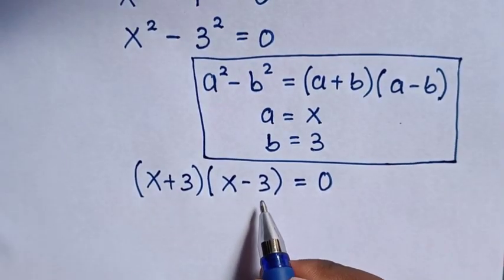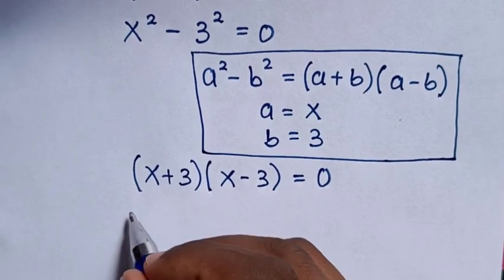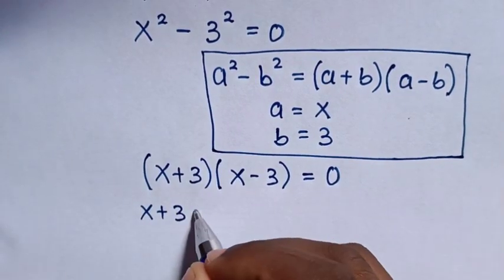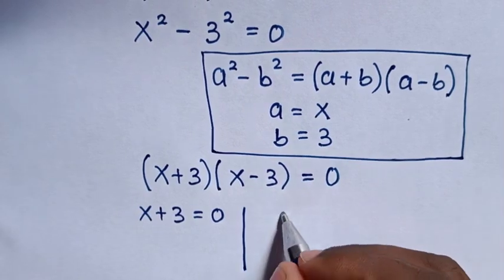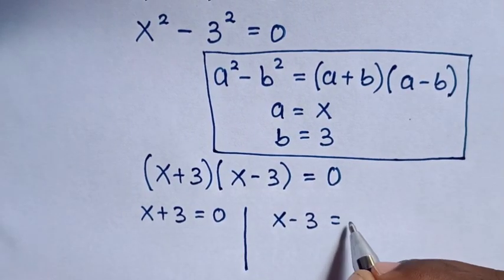Then from this equation, we have two solutions, where the first solution is x + 3 is equal to 0, and the second solution is x - 3 is equal to 0.